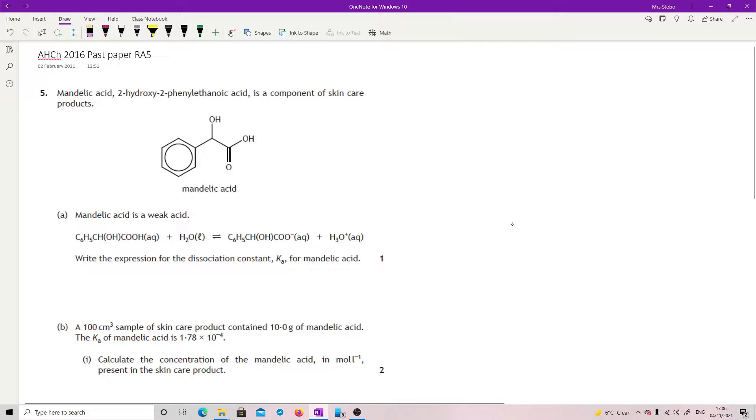Mandelic acid, question five. Mandelic acid, 2-hydroxy-2-phenylethanoic acid, is a component of skincare products, and you're given a nice little skeletal formula of it. Mandelic acid is a weak acid, and you're given the dissociation. Write the expression for the dissociation constant, Ka, for mandelic acid.